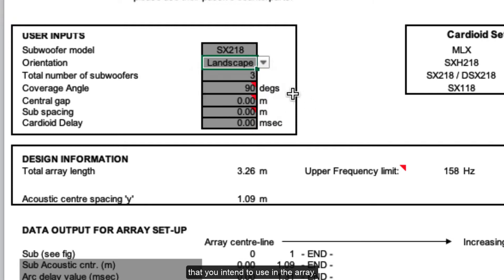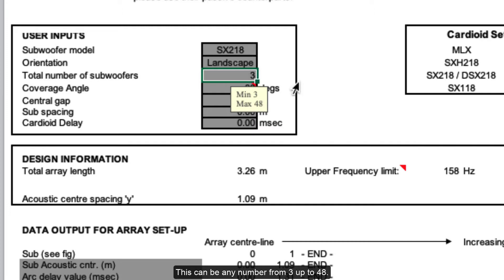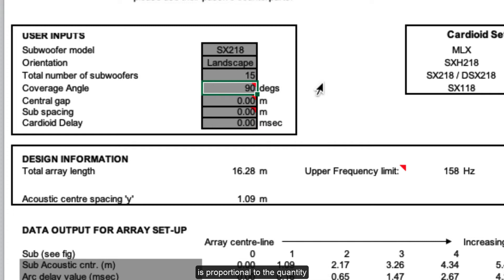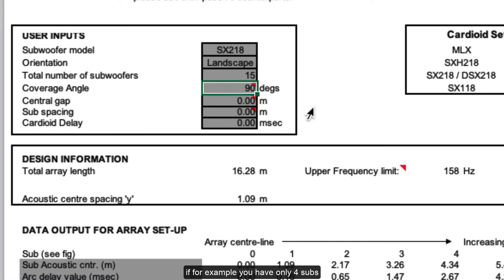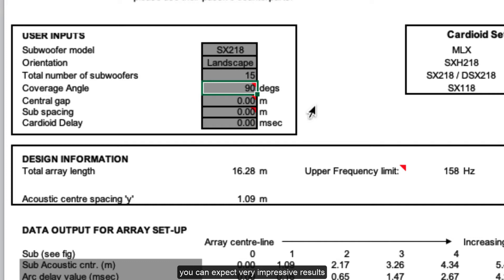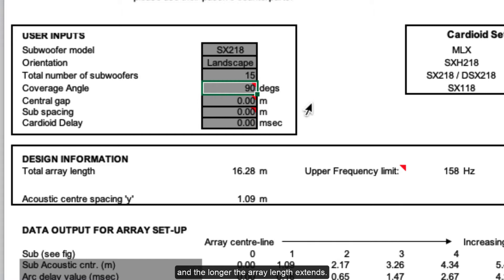Now type in the number of subwoofers that you intend to use in the array. This can be any number from 3 up to 48. Note that the effectiveness of the array is proportional to the quantity and spacing of subs. Don't expect precise horizontal control if, for example, you only have 4 subs spaced 2 metres apart. Once the array length extends over around 10 metres, you can expect very impressive results, giving increasingly accurate horizontal dispersion control the more subs you add and the longer the array length extends.